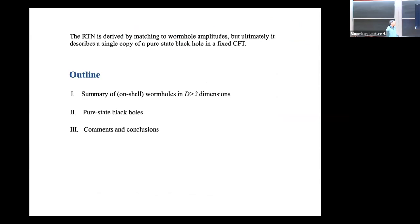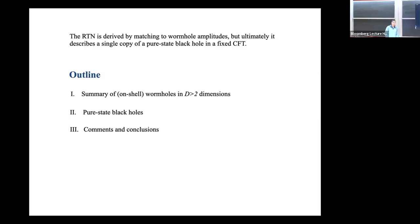The random tensor network we're after is derived by matching to wormhole amplitudes, but ultimately it describes a single copy of a pure state black hole in a fixed CFT. We need to start with wormholes to get there. I'll start with a summary of what we know about wormholes in more than two space-time dimensions, focusing on the on-shell wormholes that will be important for this discussion of the tensor network.